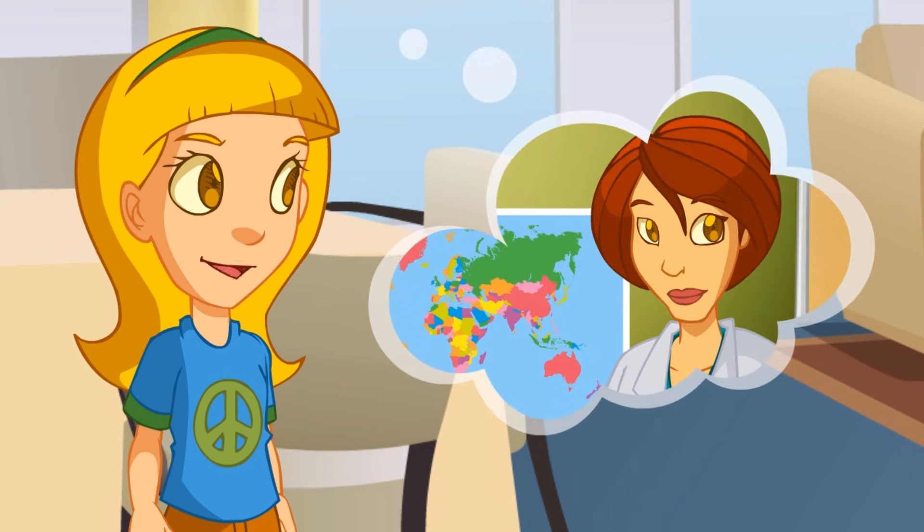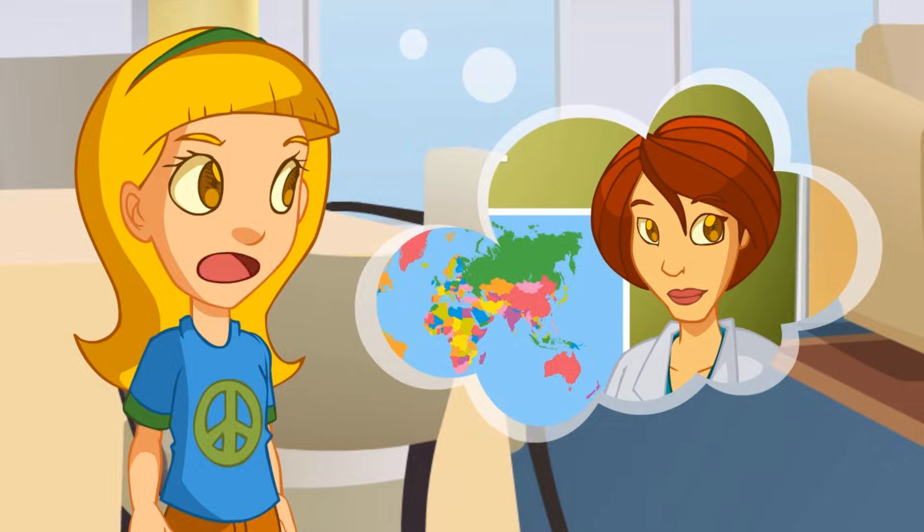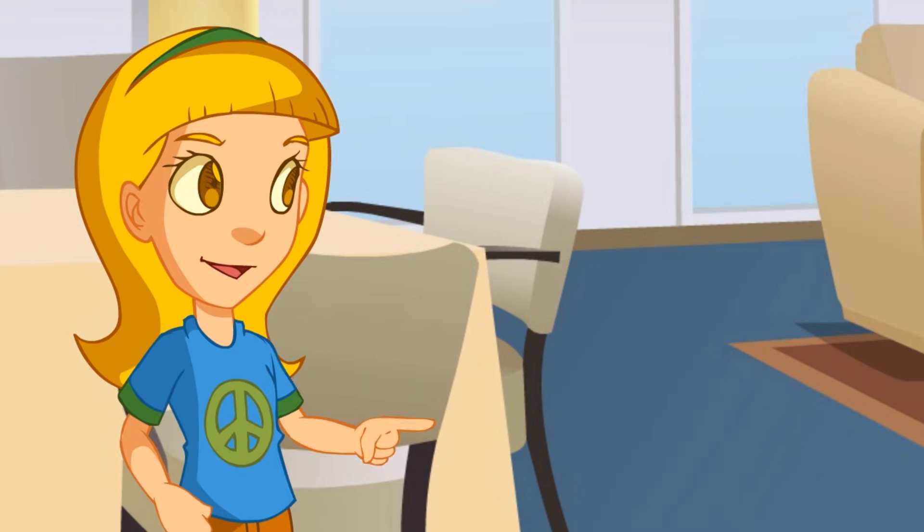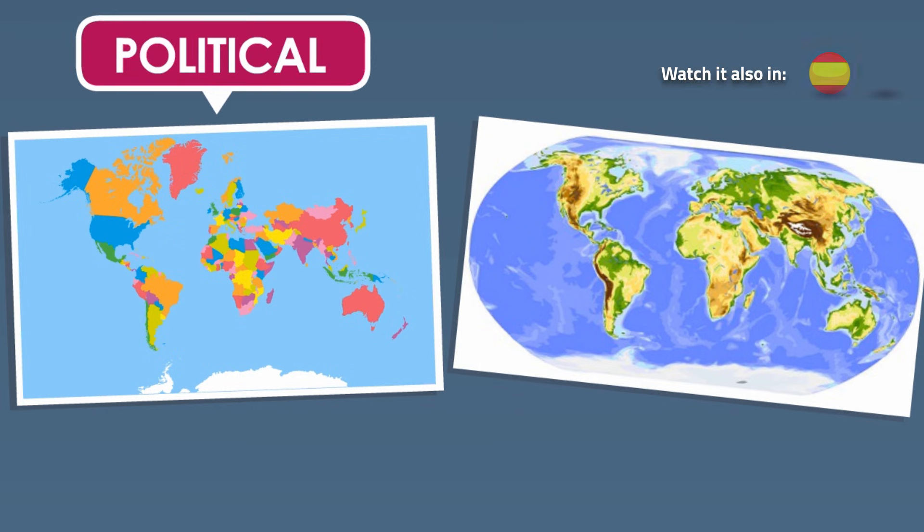Our teacher told us there are many different maps that show different things. For example, look, there's an example here with a world map. The map on the left is a political map. That on the right is a physical map.